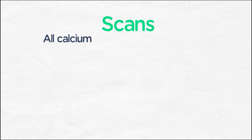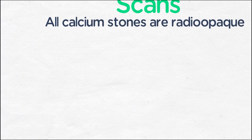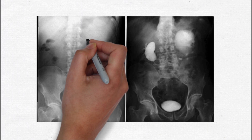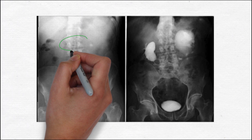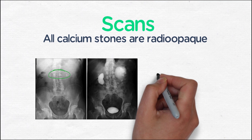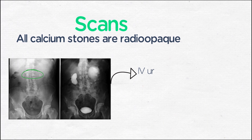All calcium stones are radio-opaque, and this is a key thing to recognize as you study calcium-based renal stones. On these two images of the same patient with renal stones, please note that on the left side there's a radio-opaque renal stone in a standard radiograph. On the right is an IV urogram showing left-sided hydronephrosis.